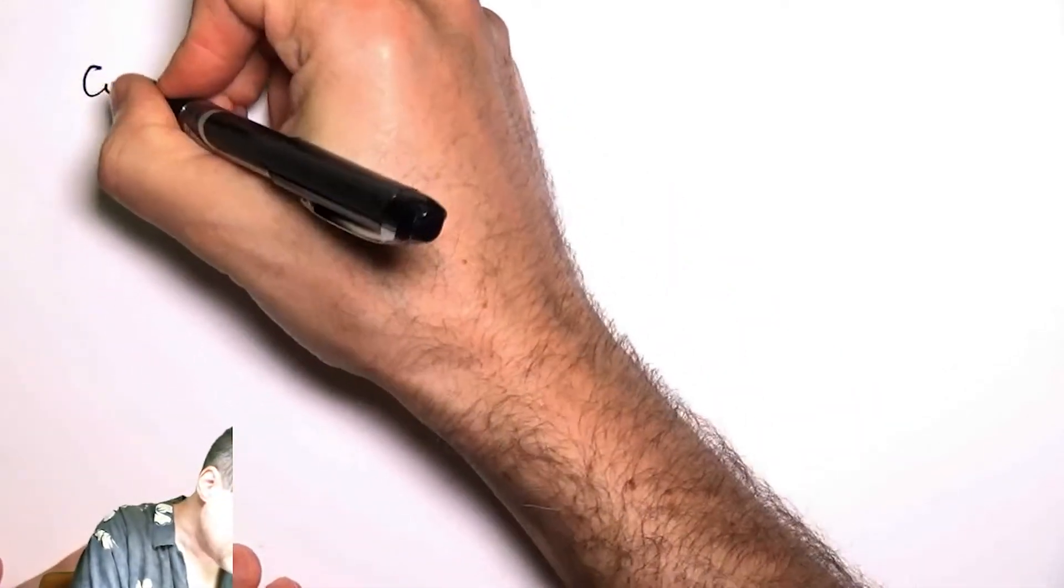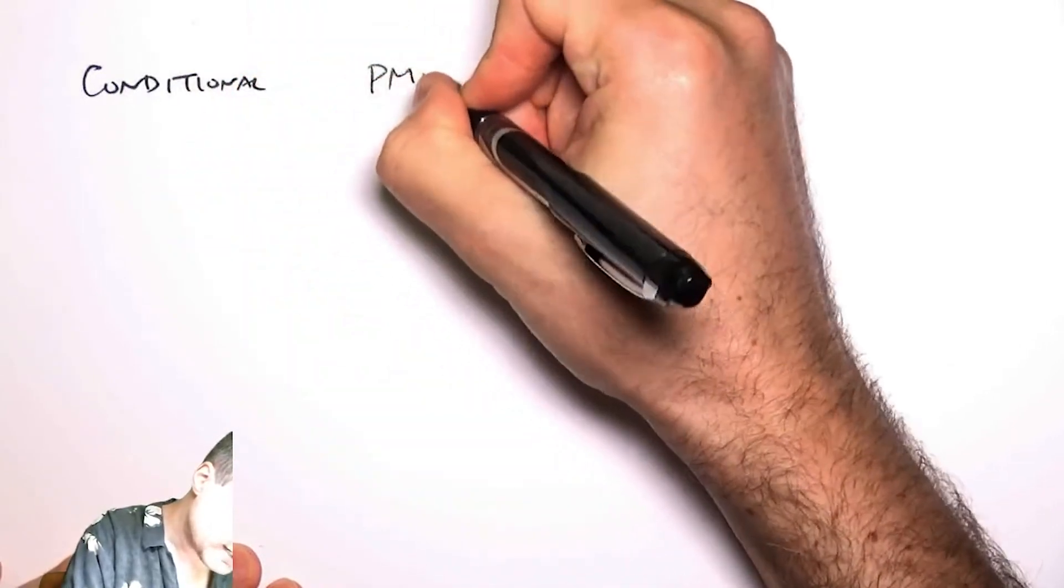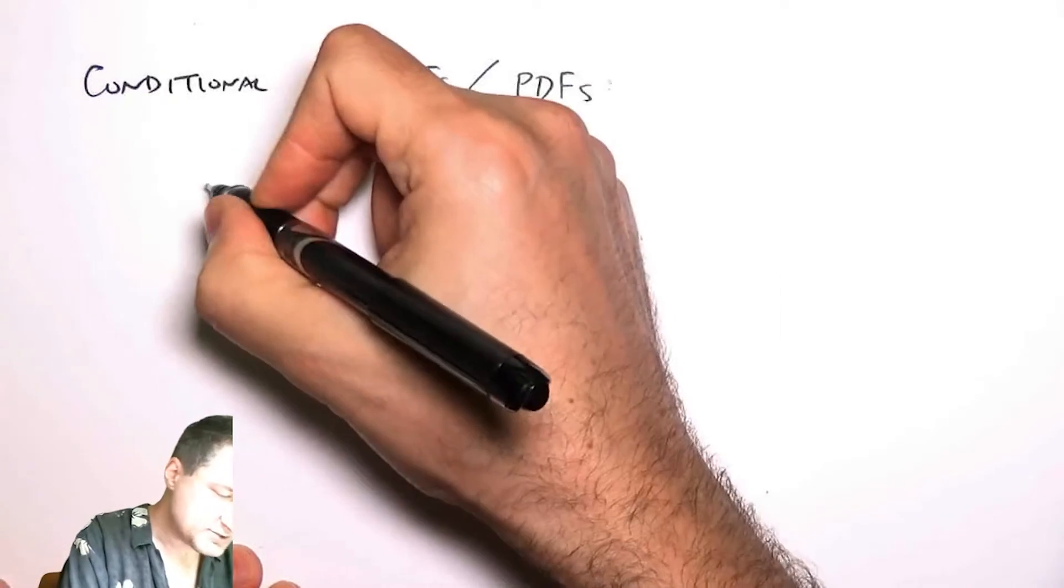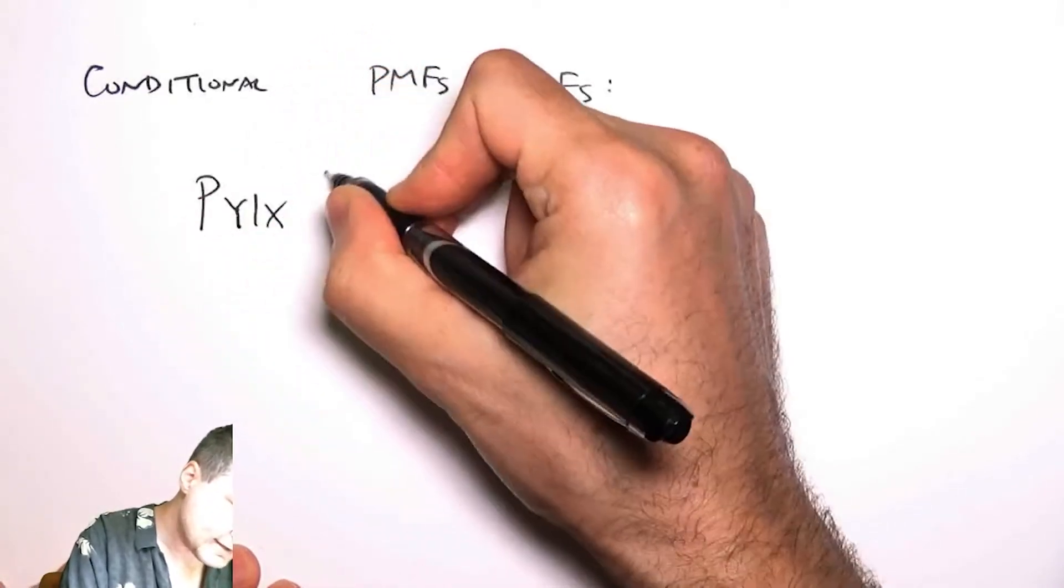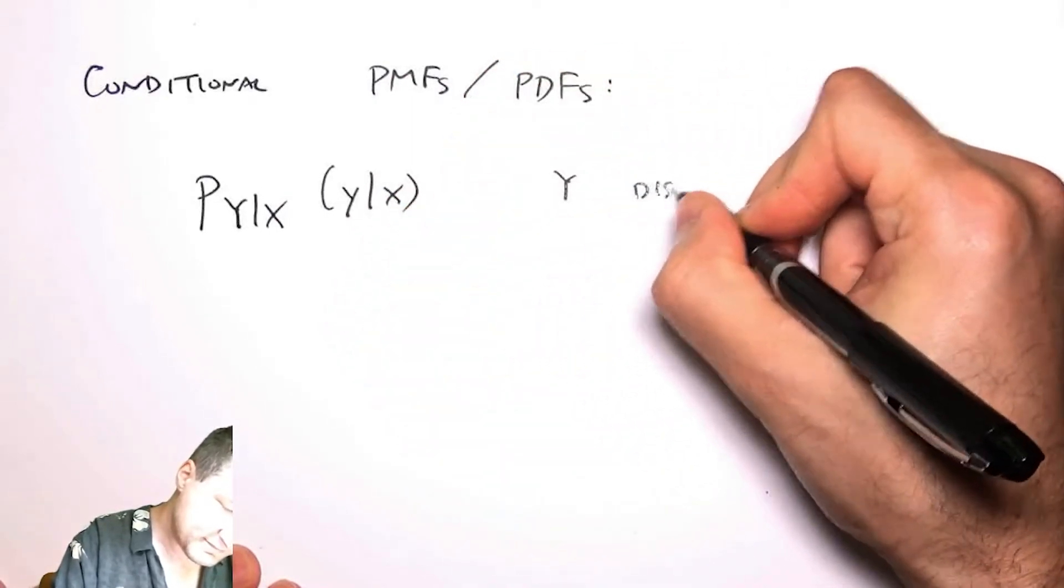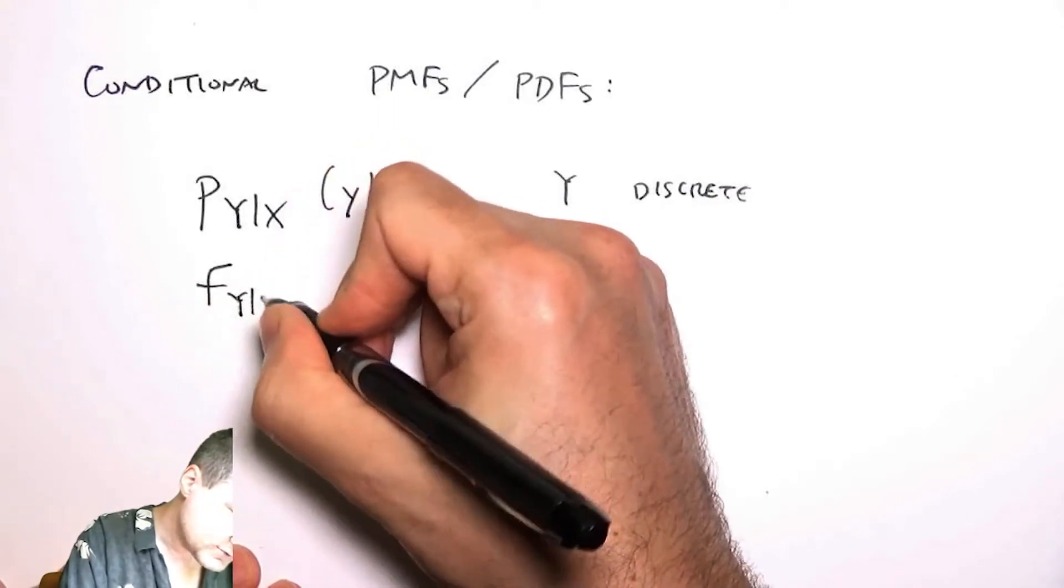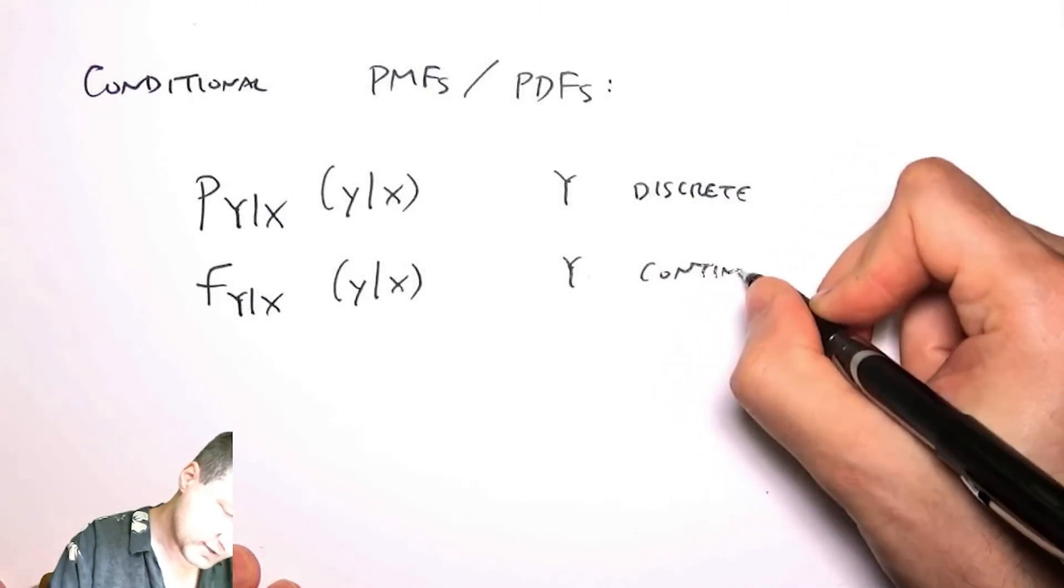Okay, so by now we introduced conditional PDFs and conditional PMFs, and let me just refresh on our notation for that. So if I had a discrete y, then I would have a PMF, and if I had a continuous y, then I would have a PDF.